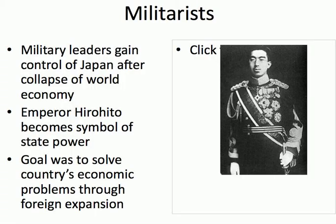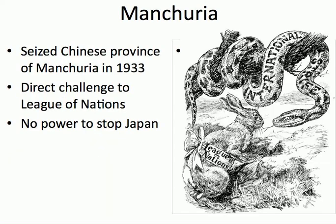The militarists were people who glorify the power of the military. The military leaders gained control of Japan after the collapse of the world economy in 1929. Their platform was 'we need a strong military to protect ourselves.' Emperor Hirohito becomes a symbol of state power. They said if we're going to have a strong military, we're going to use it to conquer other countries and expand into foreign lands. The place they looked to, as discussed in a previous lecture, was China.